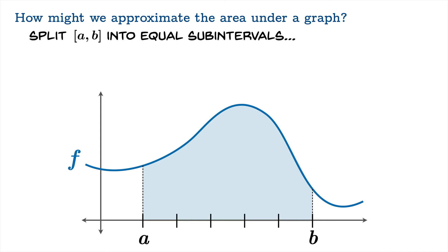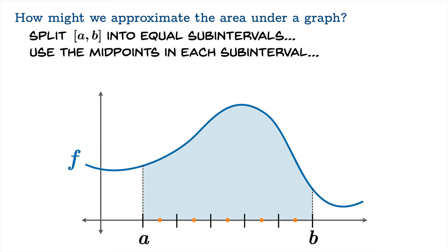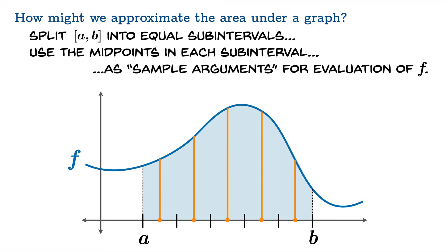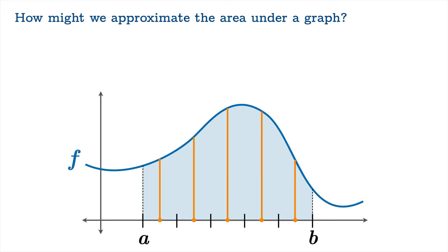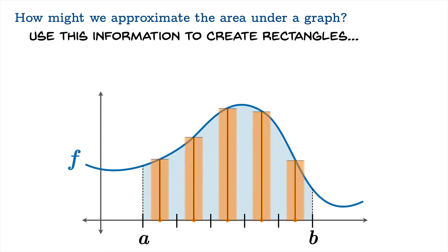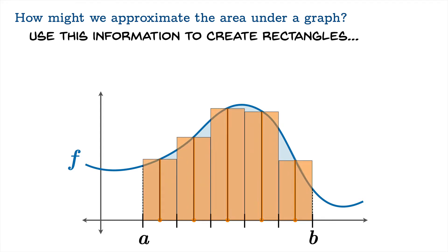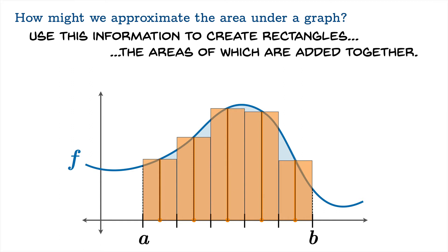Let's look at one other strategy. We could take the midpoint of each interval, use the midpoint to sample the function value, and from these function values create rectangles. We'll find the sum of these five areas, and that number we get we could call a midpoint sum. So there are three so-called regular constructions for creating Riemann sums to approximate the area under a curve.